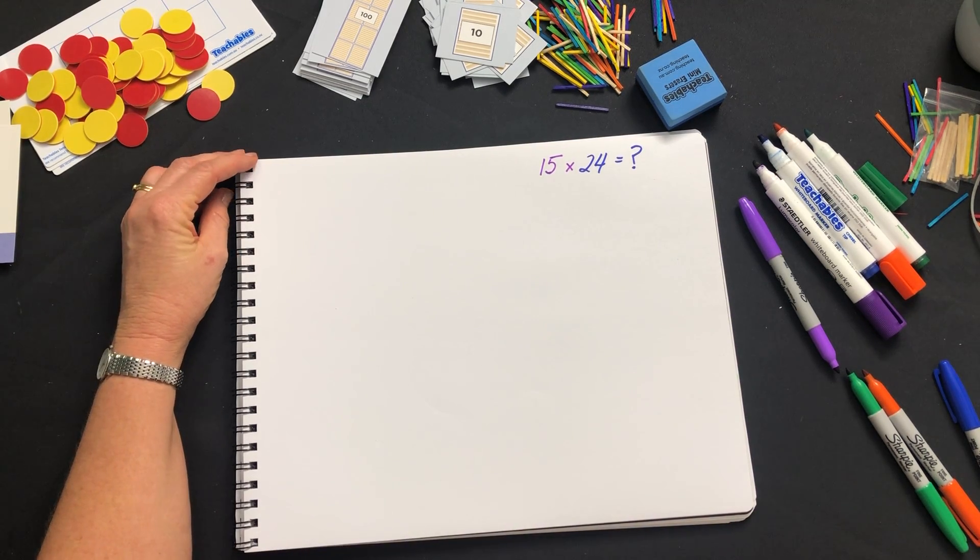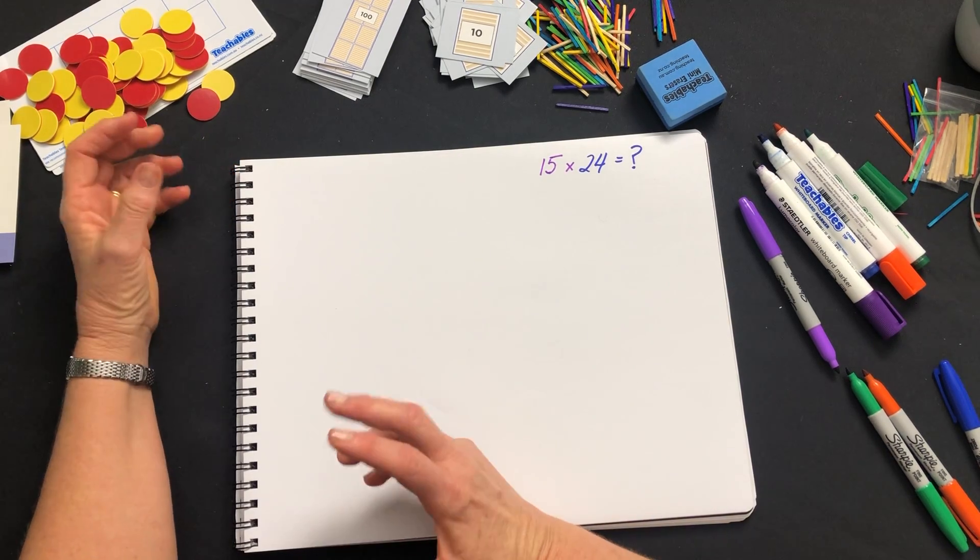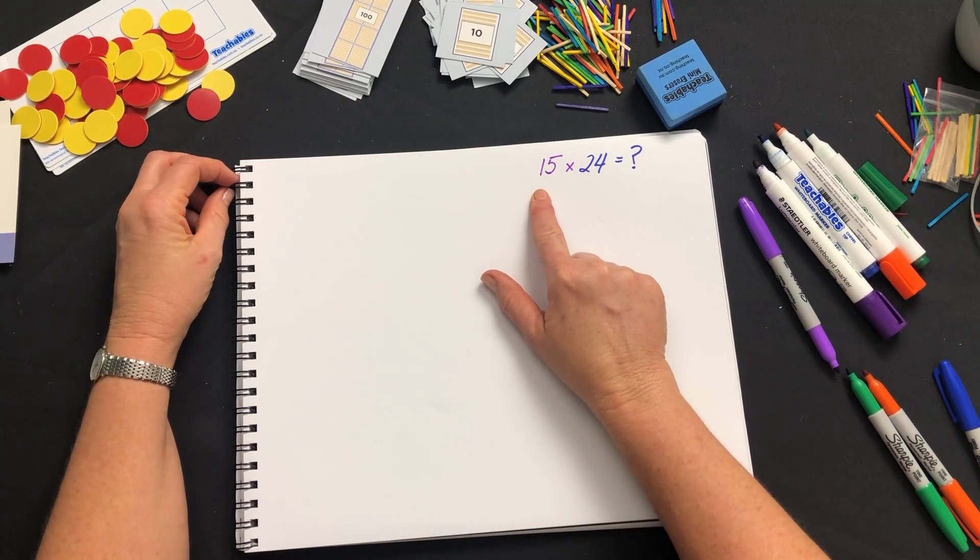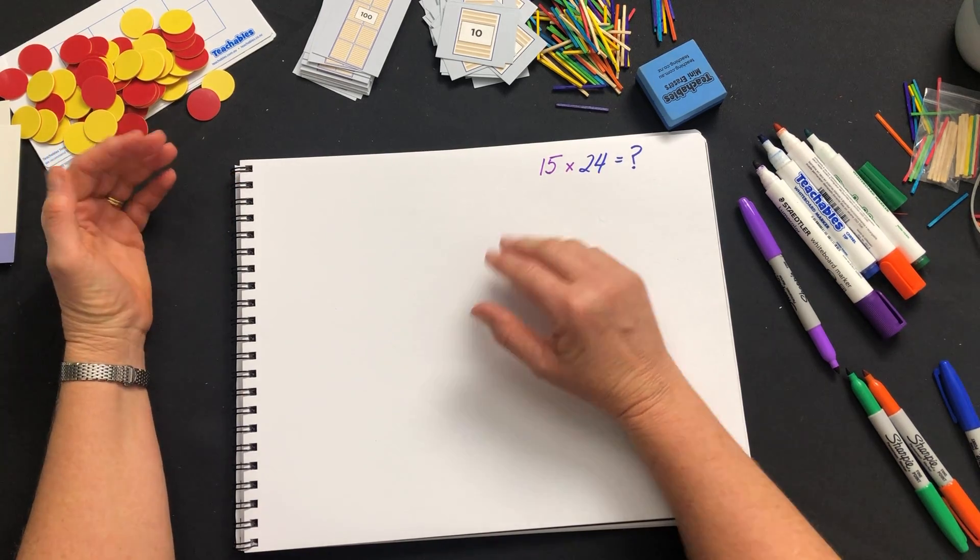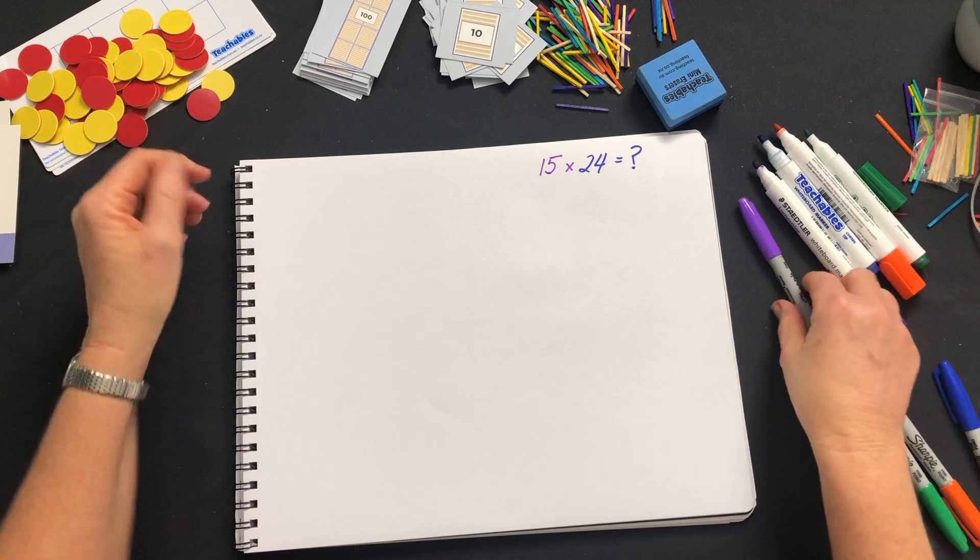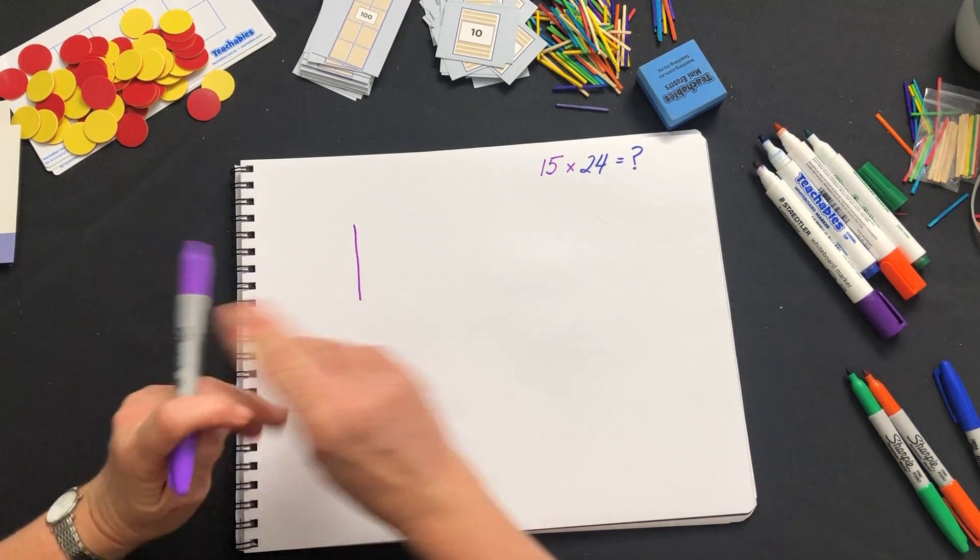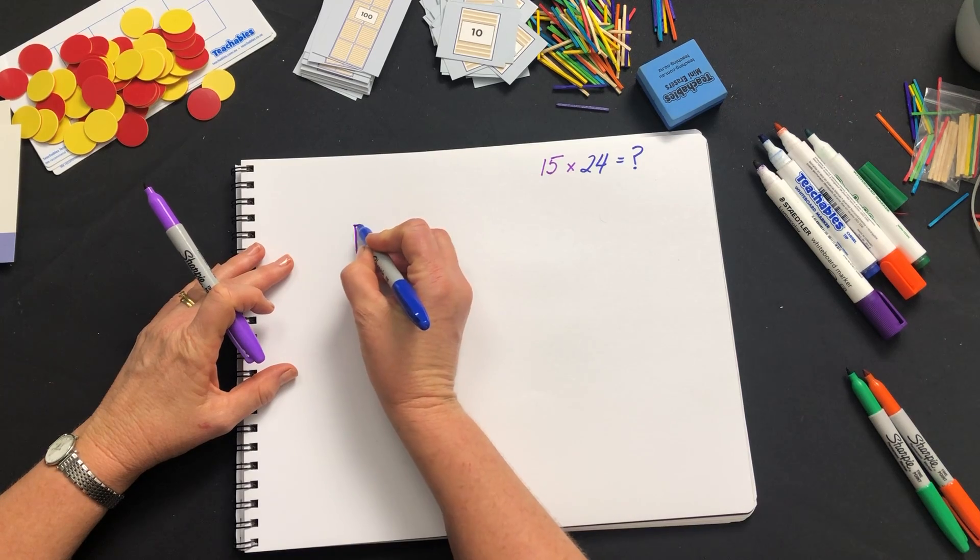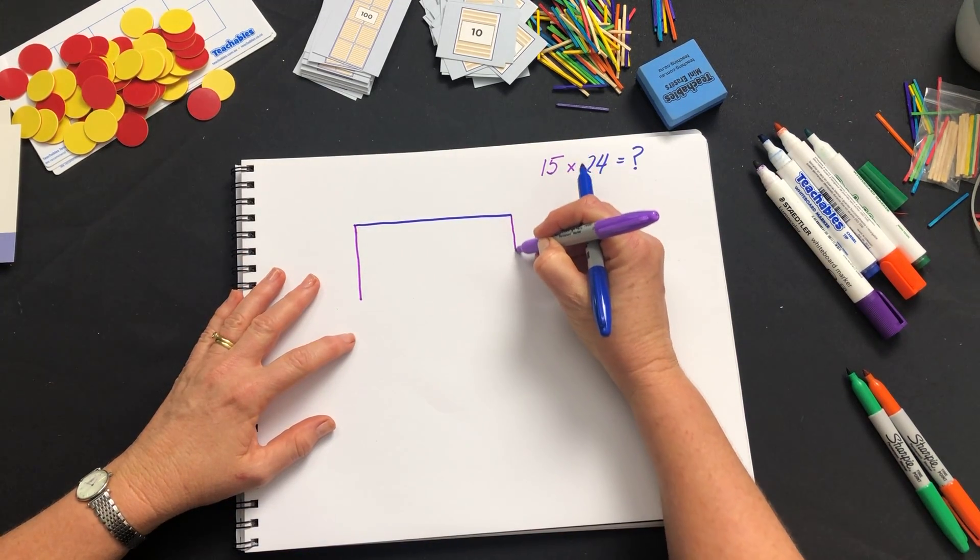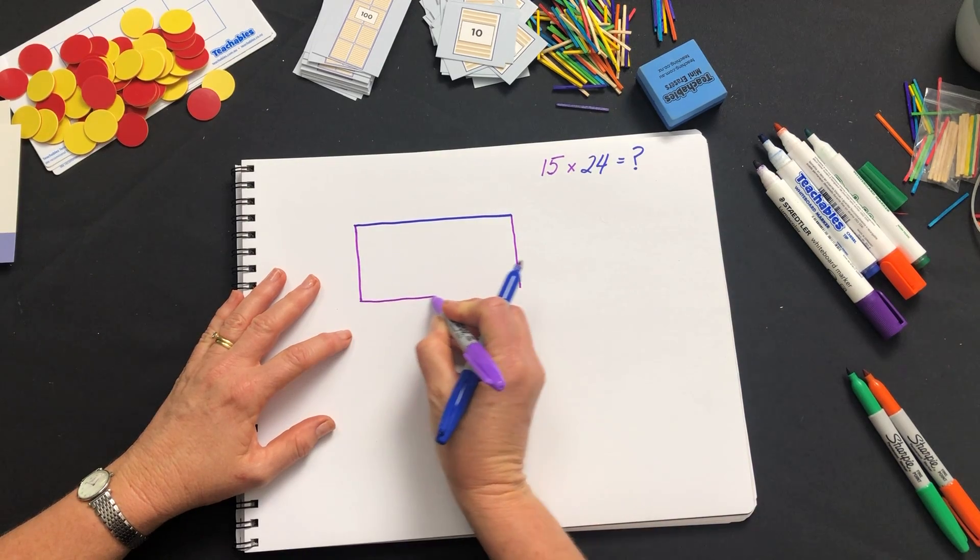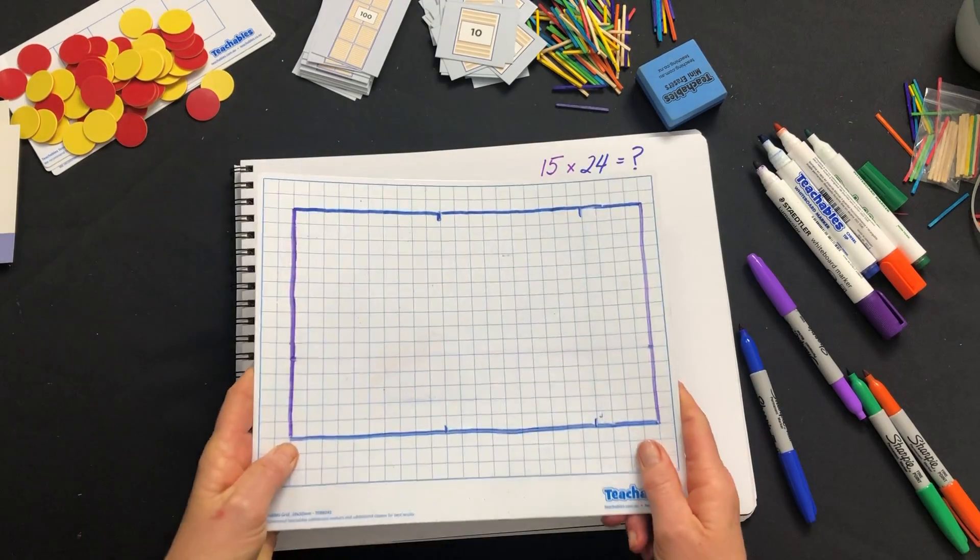Okay, let's get to it. Every multiplication can be represented either as groups, 15 groups with 24 in each group, or as an array slash rectangle. So I can draw a rectangle that is 15 by 24. Now often I don't draw these to scale, they're just a quick representation.